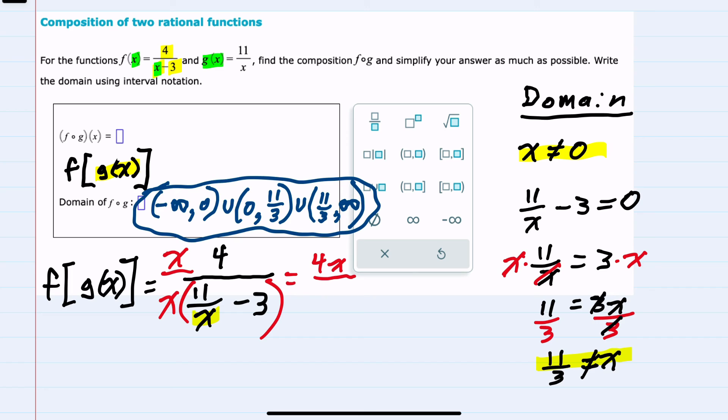In the denominator, when we distribute, multiplying x by 11 over x, the x's cancel, giving us just 11. Distributing the x to the minus 3 gives us a minus 3x. And this is our simplified composite function.